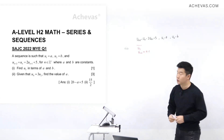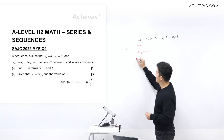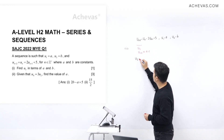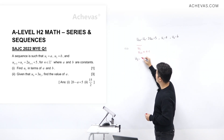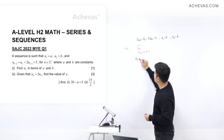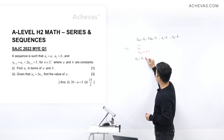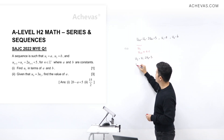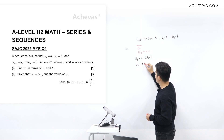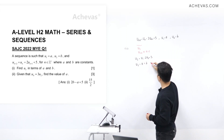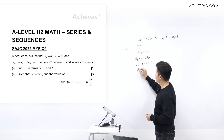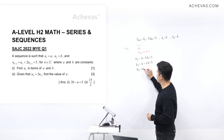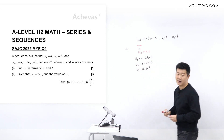Making use of the given equation with n equal to 1: u3 plus u1 is equal to 2u2 plus 5. Since u1 is a and u2 is b, we get u3 plus a equals 2b plus 5. Therefore, u3 is equal to 2b minus a plus 5.